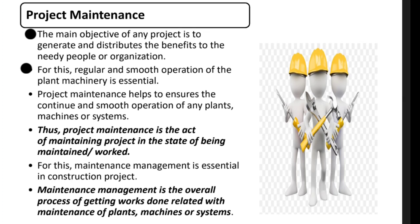If the plant or equipment is operating smoothly, the benefit and output will be much higher. Maintenance helps to ensure the continuous and smooth operation of any plant, machine, or system. This means maintaining the plant and equipment so that smooth operation is possible.